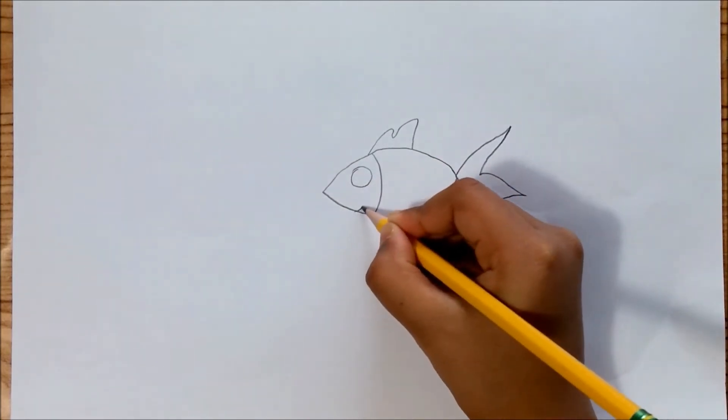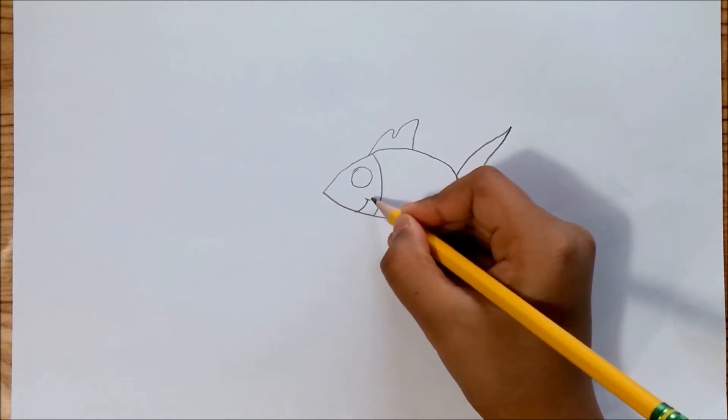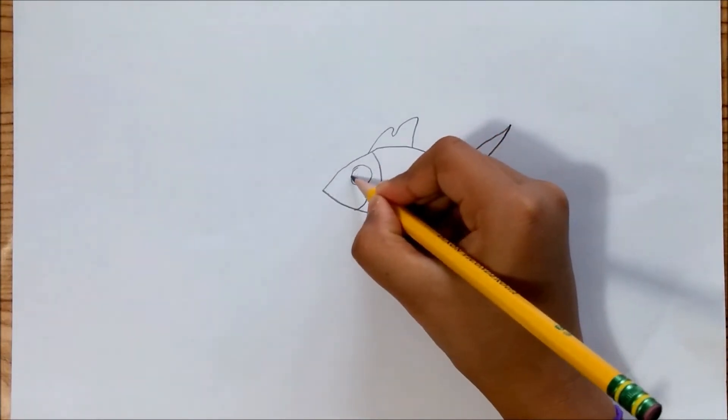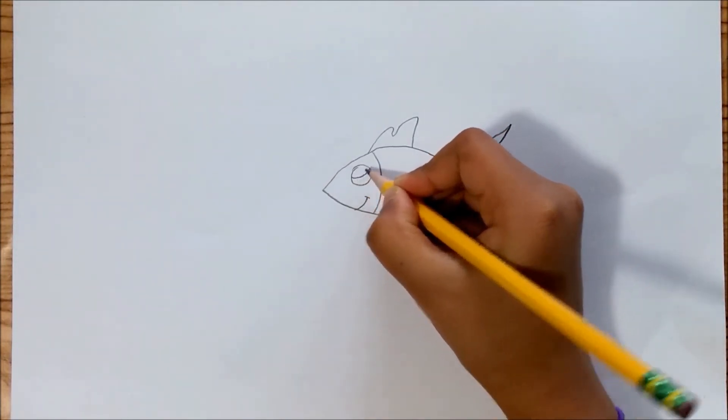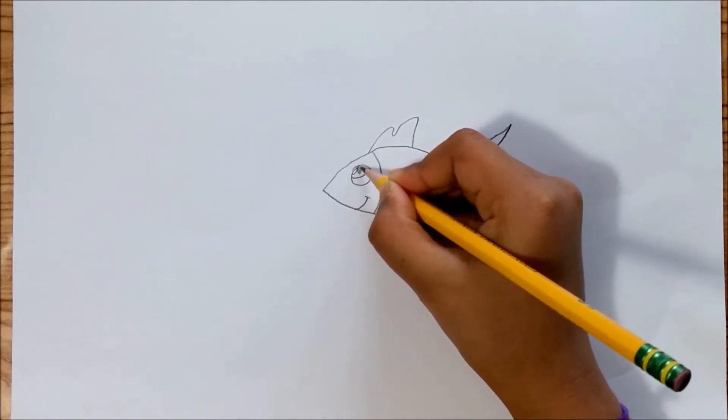Then draw a curved line for the mouth. You can draw these little lines for the smile, but you don't need to. Then draw a curved line for the eyeball and another tinier curved line to show that the eyes are shining.